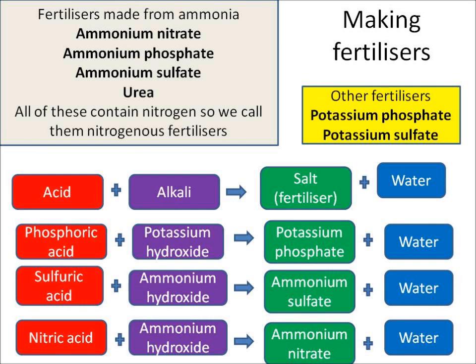This is about making different fertilisers. We've got fertilisers which are made from ammonia and they contain nitrogen. Ammonium nitrate contains nitrogen, ammonium phosphate contains nitrogen and phosphorus, ammonium sulphate contains nitrogen and sulphur, and urea contains nitrogen — we call them nitrogenous fertilisers. There are also other fertilisers like potassium phosphate and potassium sulphate that don't contain nitrogen.